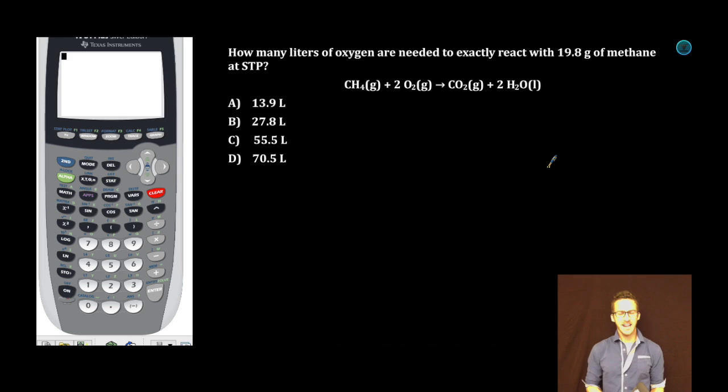Woo, more multiple choice. How many liters of oxygen are needed to exactly react with 19.8 grams of methane at STP?